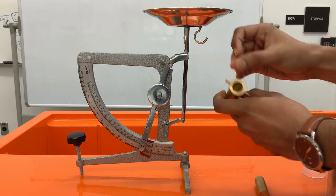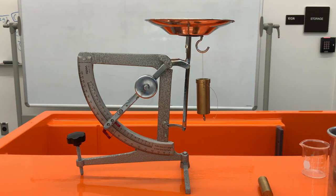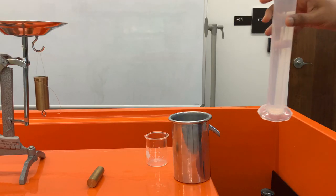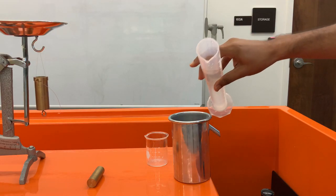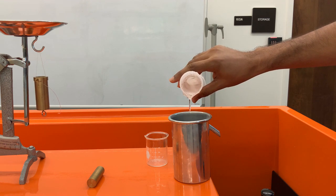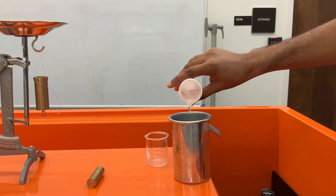Now I am going to take the measurement of the empty bucket without water which is 98 grams. Next I am going to slowly fill the displacement vessel up to the point where it lets go the additional water.